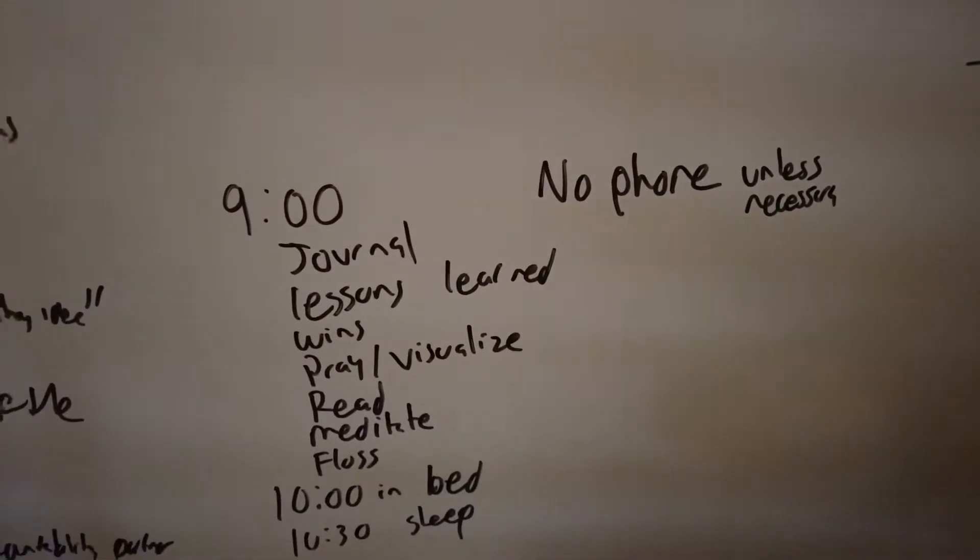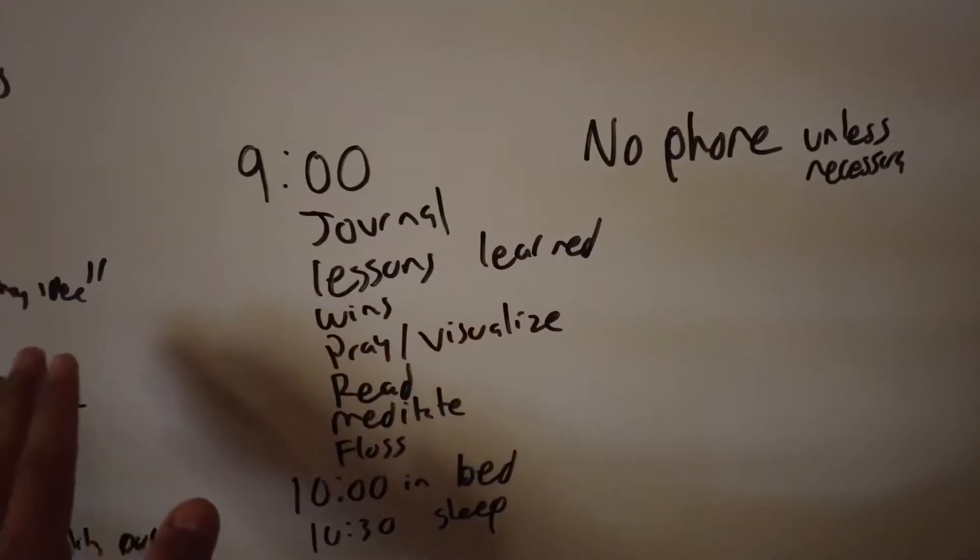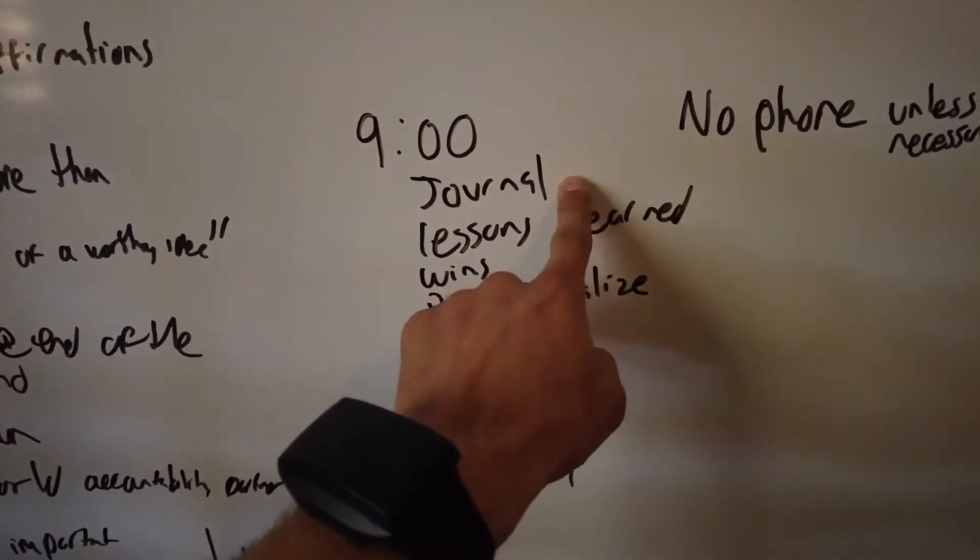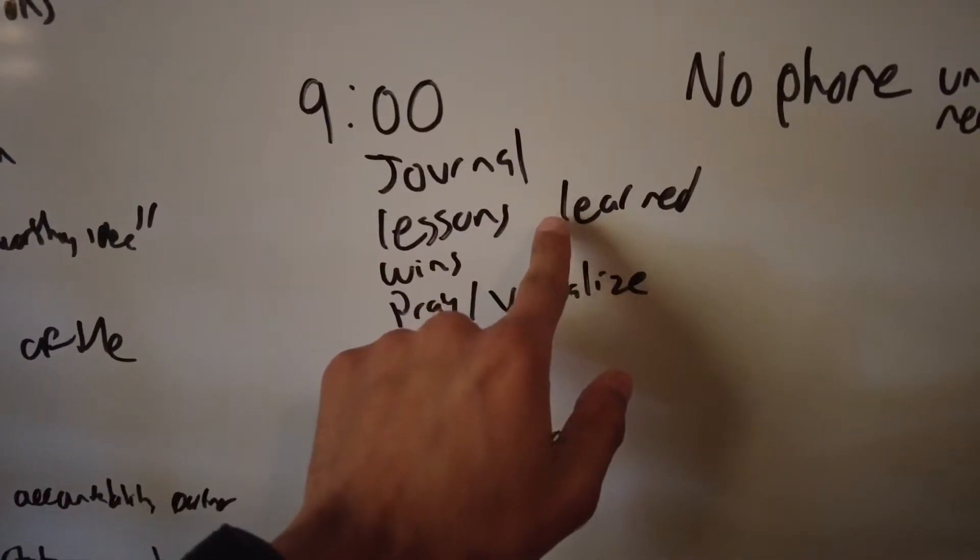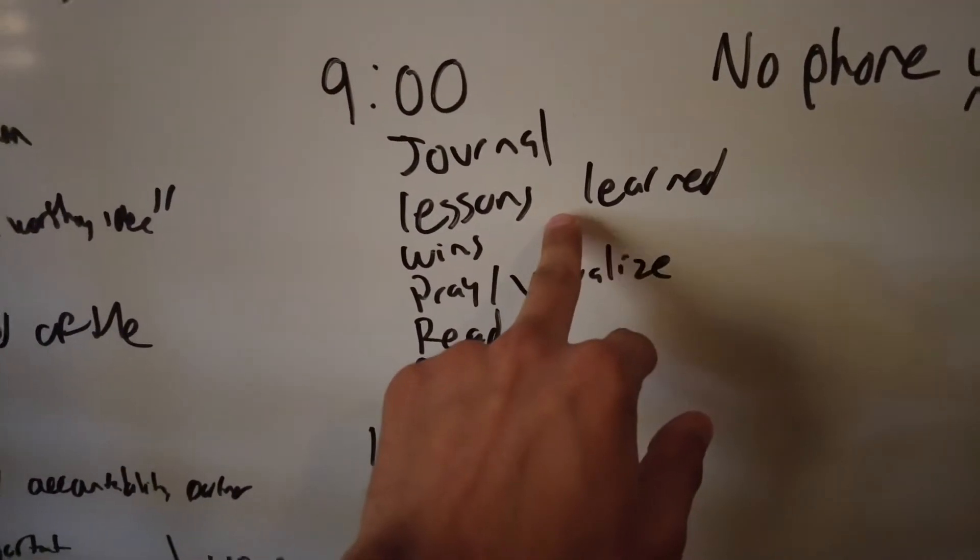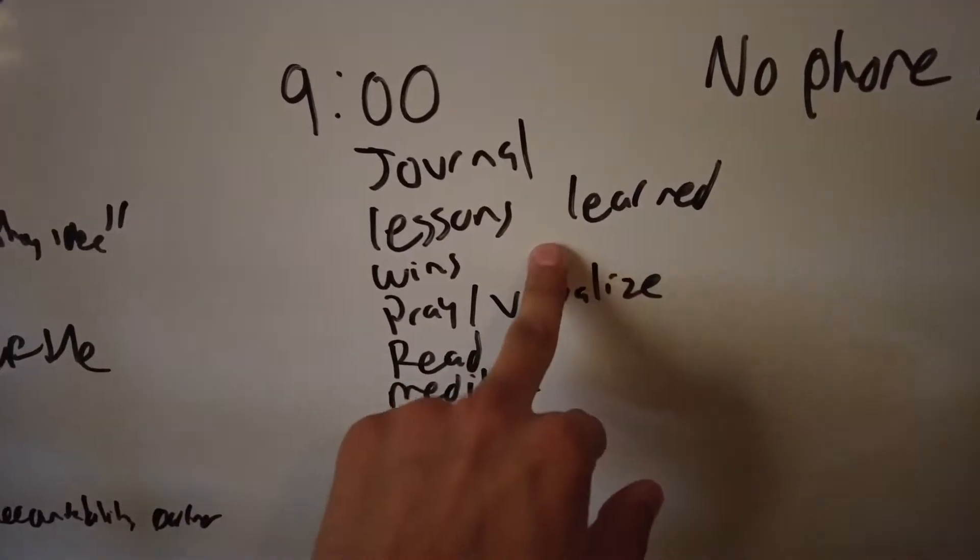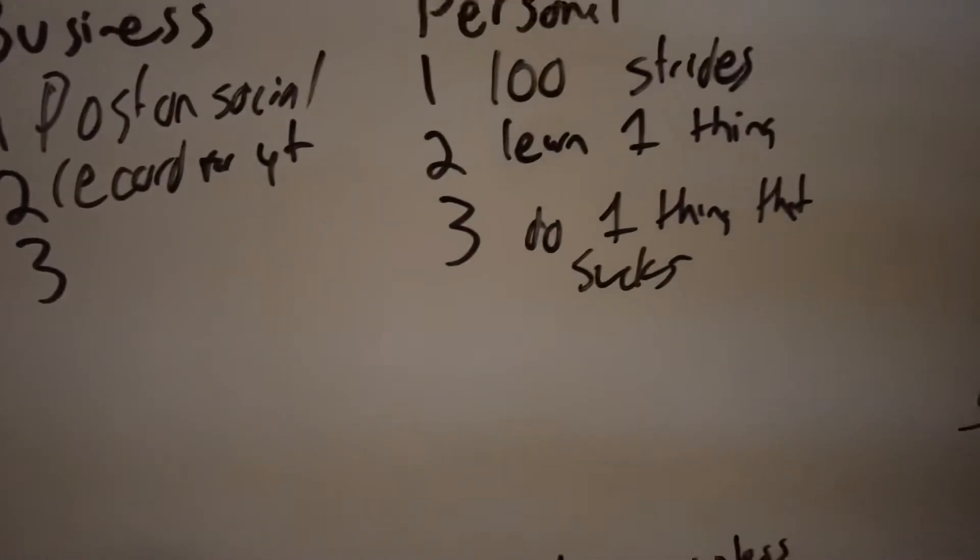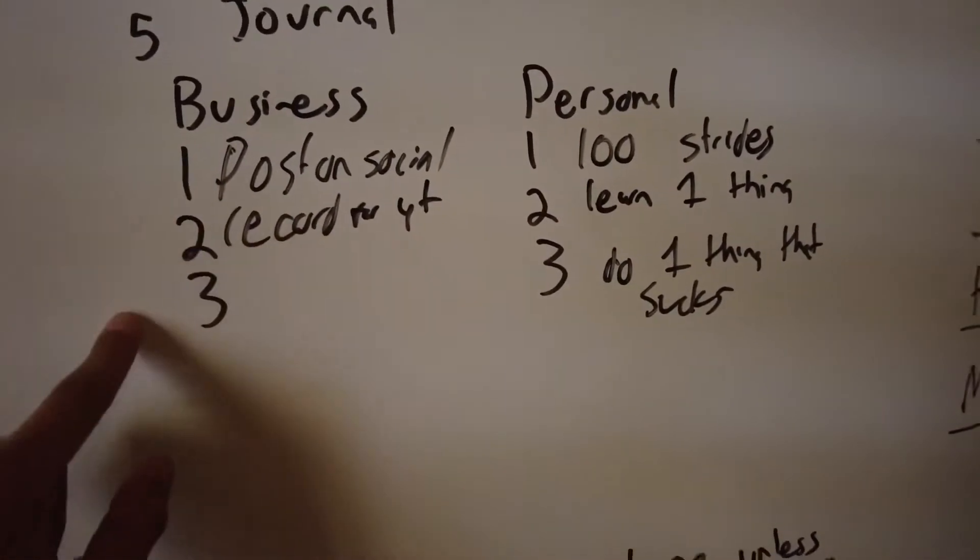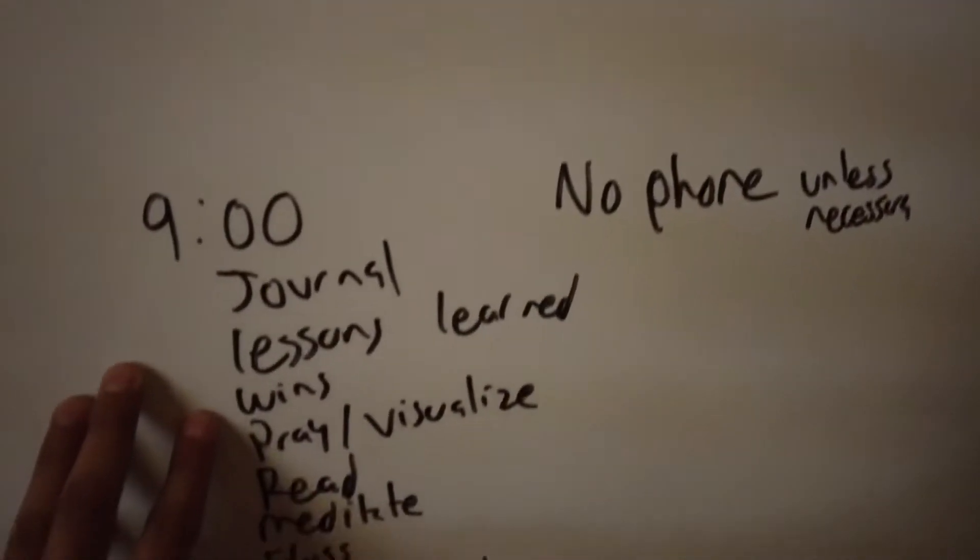But pretty much by 9 o'clock I try to stop using my phone. Then I like to journal. I write down everything—anything that I learned or anything that I can improve on. Then I check: did I complete these three things today? If I did, that's great.